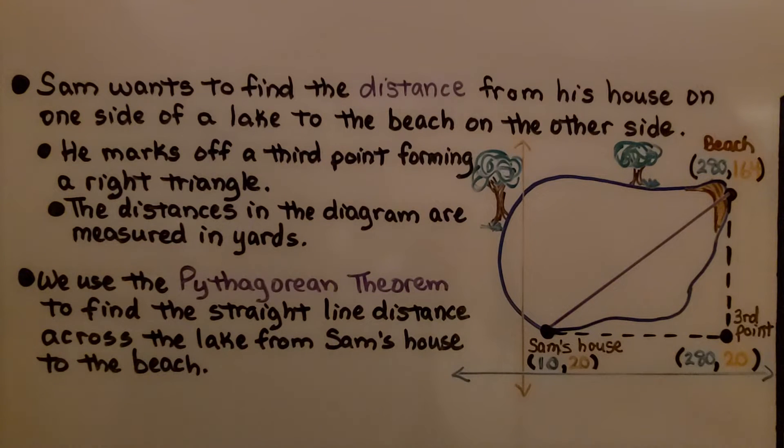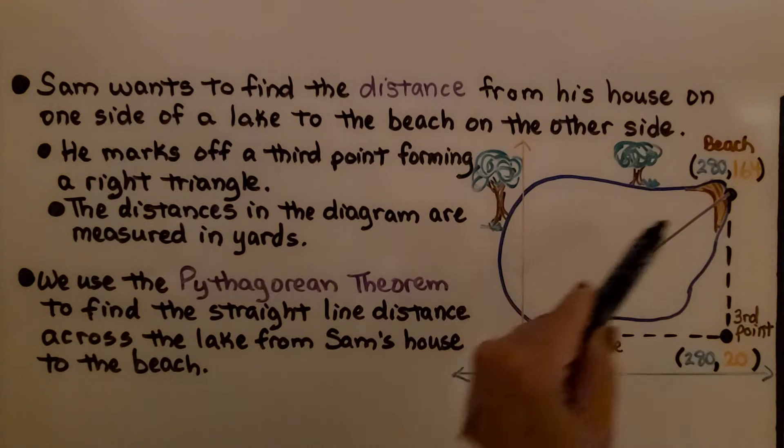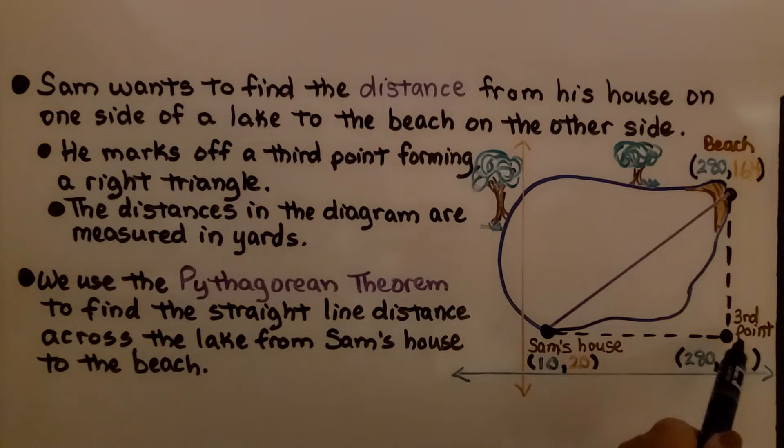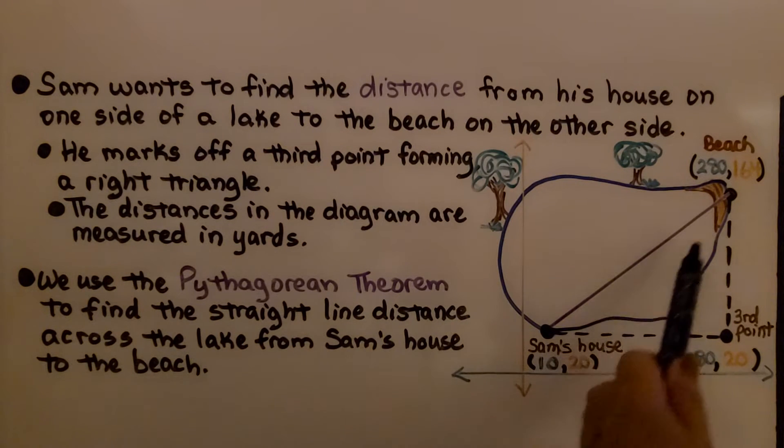Let's take a look at this diagram first. We have a couple of trees, a lake, a beach here, Sam's house, and a third point over here. Sam wants to find the distance from his house on one side of the lake to the beach on the other side. He marks off a third point forming a right triangle. The distances in the diagram are measured in yards. We use the Pythagorean theorem to find the straight line distance across the lake from Sam's house to the beach.